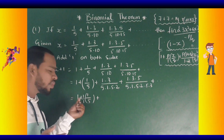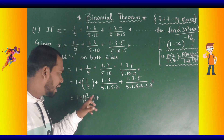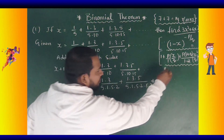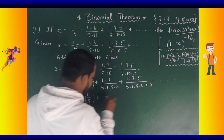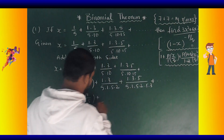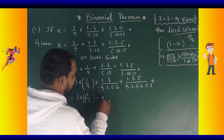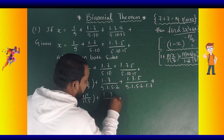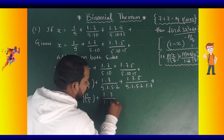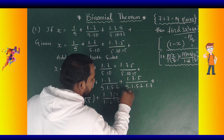The first term is 1 by 5. The model 1 by 5 corresponds to x by q equals 1 by 5.